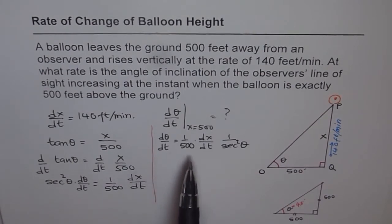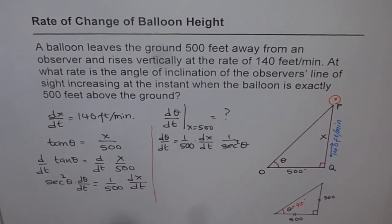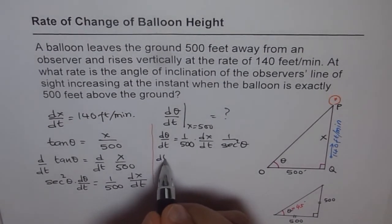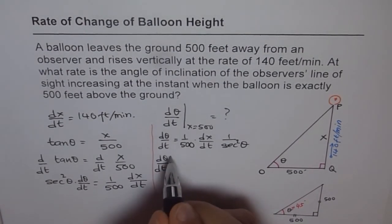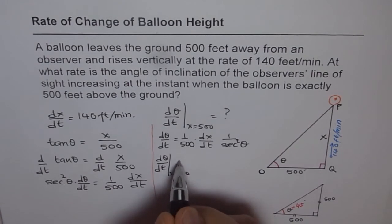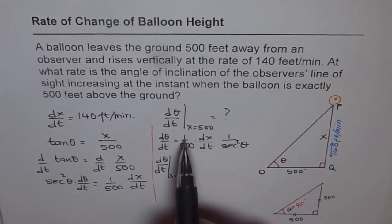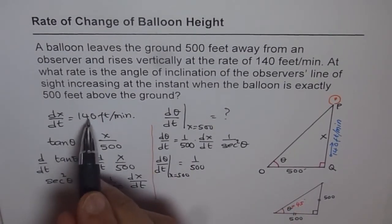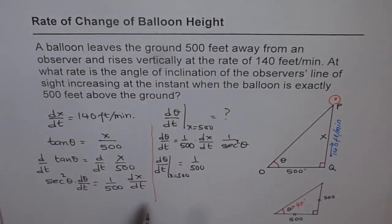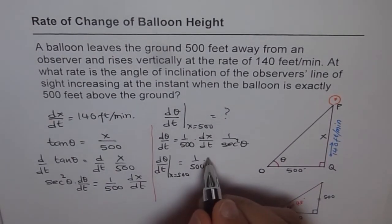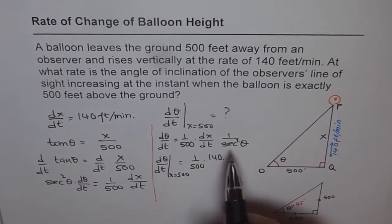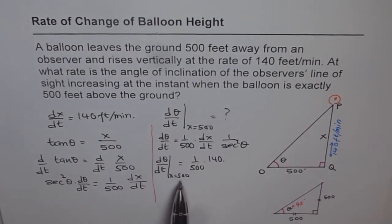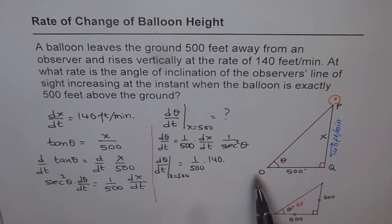Now at the instance when x is 500, what is the situation? dθ/dt for x equals to 500. So that means we have 1 over 500. dx/dt is given to us as 140. Now that is also in feet per minute. So that matches. And this is also in feet, same units. We have 140. And sec²θ when x is 500. We can find from here. Now, what is sec²θ?